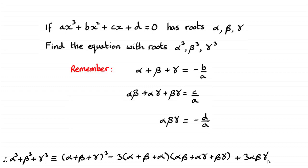What I want to do here is show you how we derive this identity, just in case you're not given it and you have to prove it. It's quite involved, and I've color coded it to help make it a lot easier to work with.